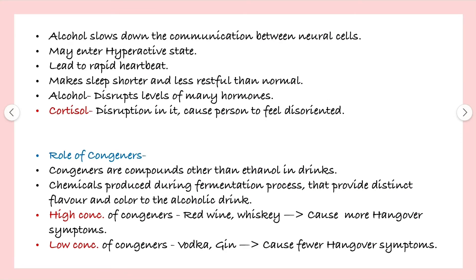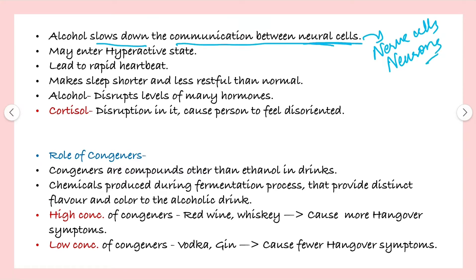Alcohol also slows down the communication between our neural cells — i.e., the nerve cells, or neurons. This slowing of communication between nerve cells can cause a person to enter a hyperactive state, which leads to rapid heartbeat. It also makes the person sleep shorter and feel less stressed than normal.